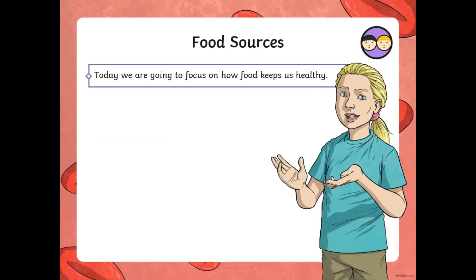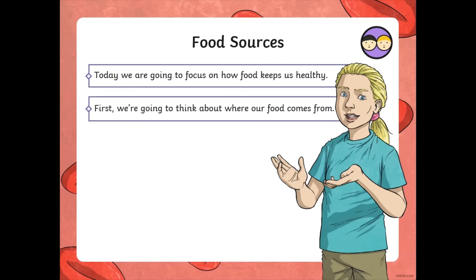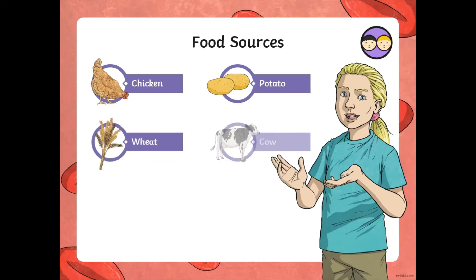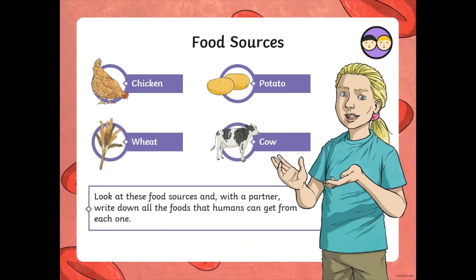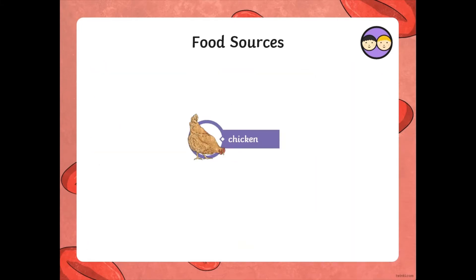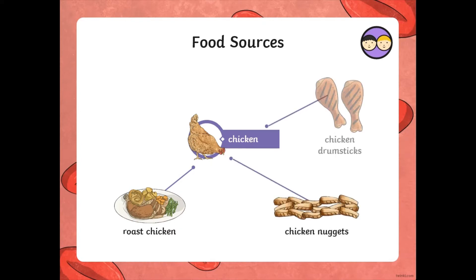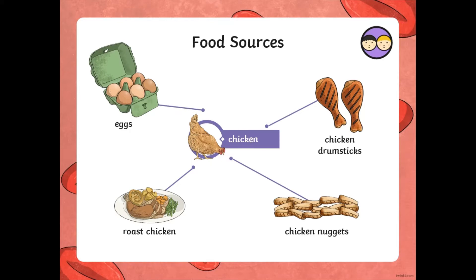We're going to focus on how food keeps us healthy. First, where does our food come from? So, chicken, potatoes, wheat, cows — these are all food sources. Let's look at the chicken first. The chicken enables us to have roast chicken, maybe chicken nuggets, chicken drumsticks, and eggs. So the chicken is a food source and it can make, in various ways, these different meals.